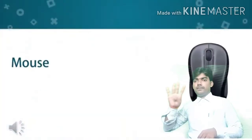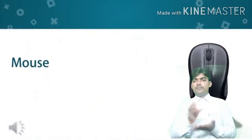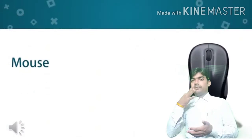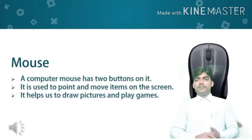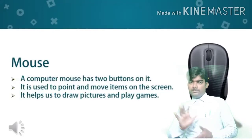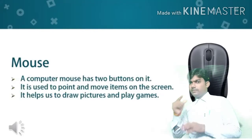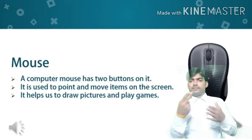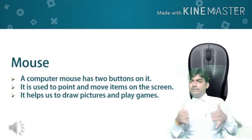Mouse. A computer mouse looks like a real mouse. It has two buttons and a scroll wheel. A mouse is used for clicking and selecting files and pictures on the screen. It also helps us to drag pictures and play games.